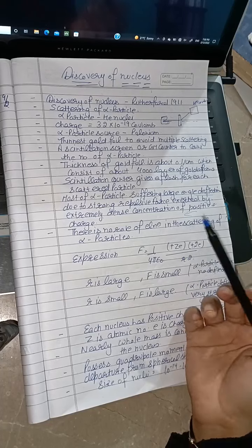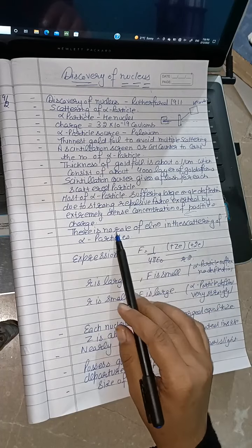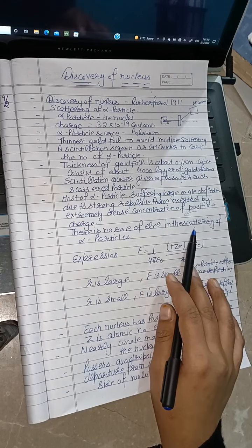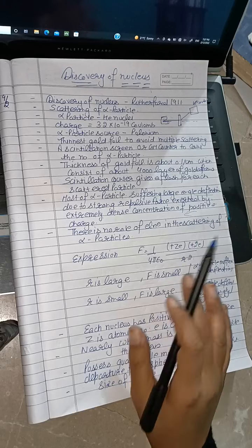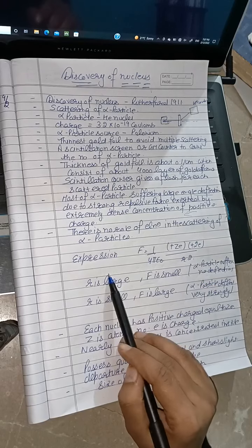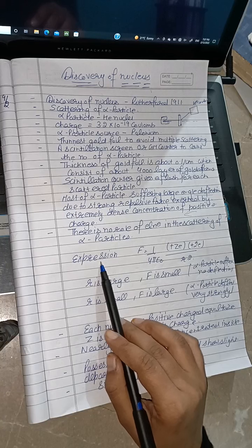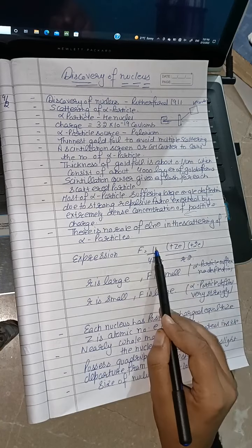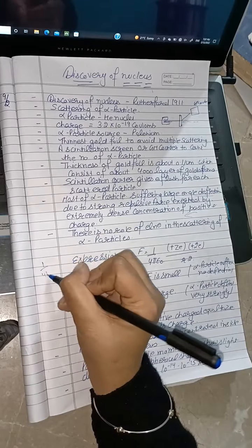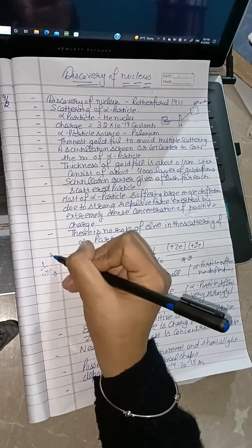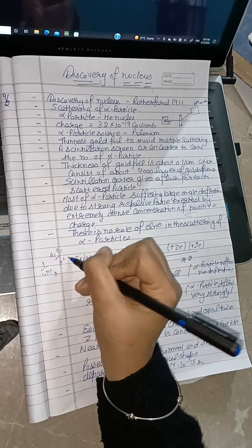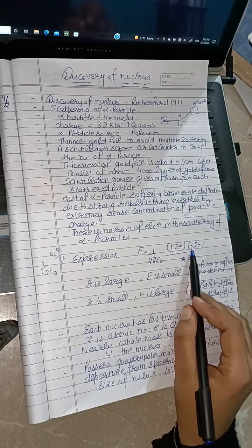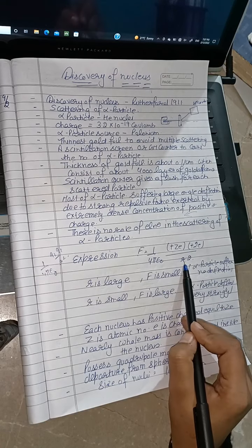Rutherford told us there is no role of electrons in scattering; electrons are simply revolving in their orbits. The expression for Coulomb force between two charged particles is: F equals 1 by 4 pi epsilon naught, q1 q2 by r square, where q1 is the nucleus charge and q2 is the alpha particle charge.